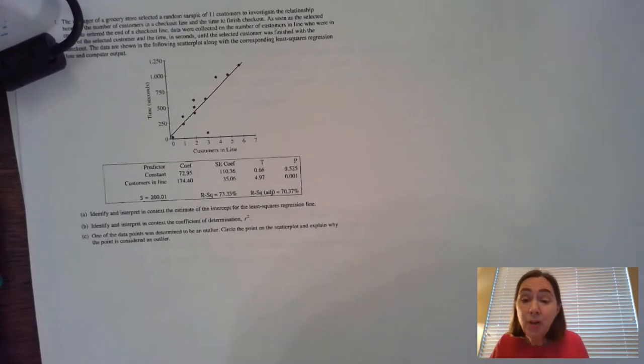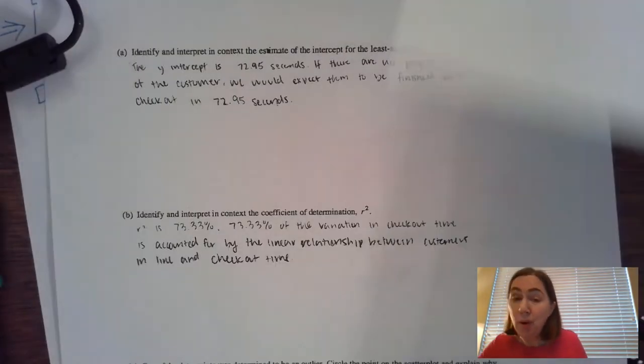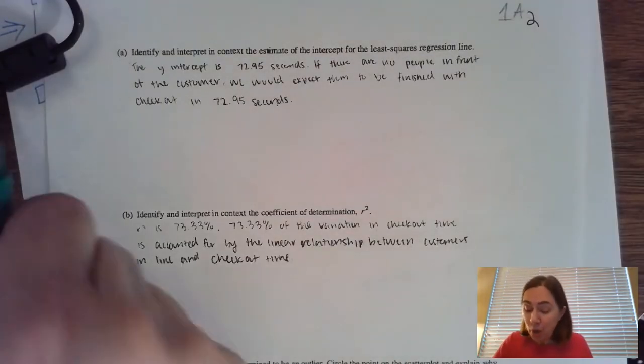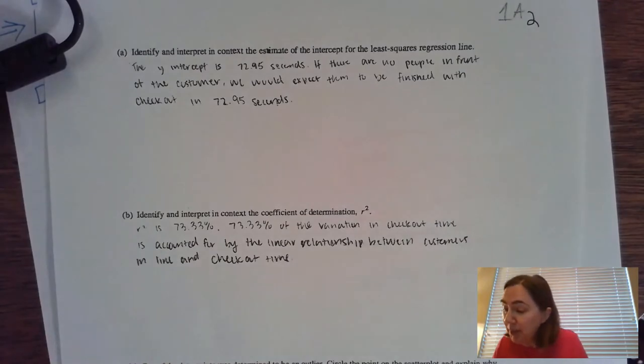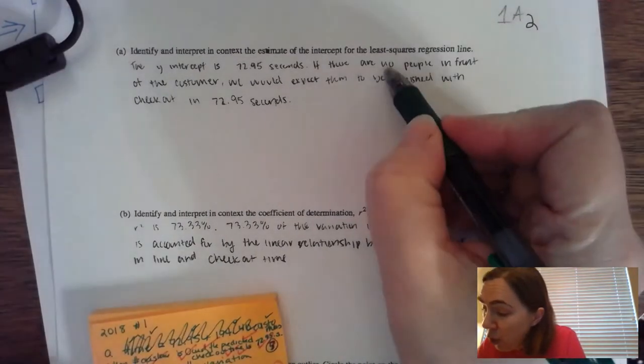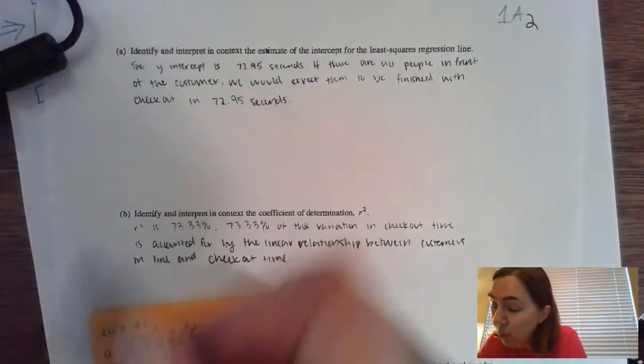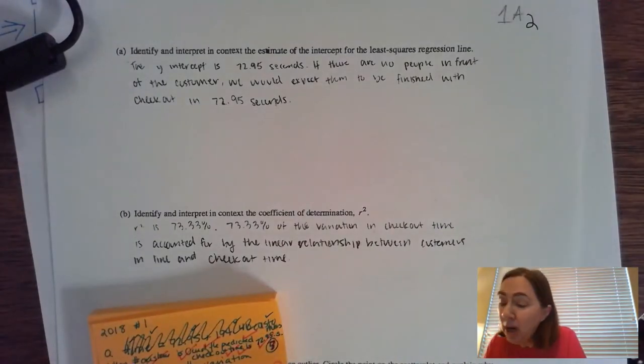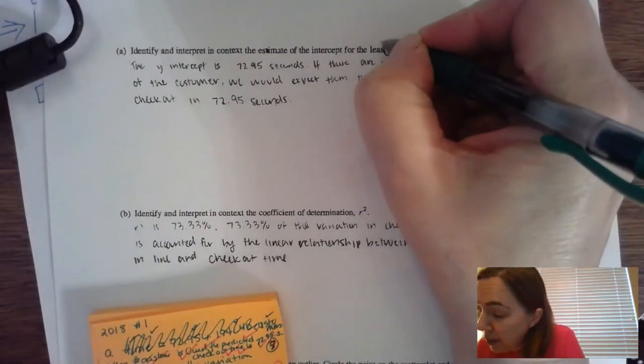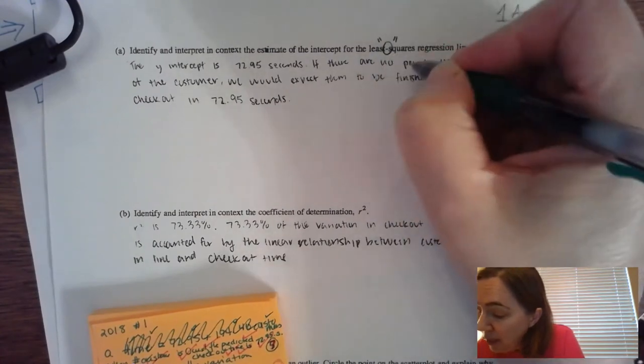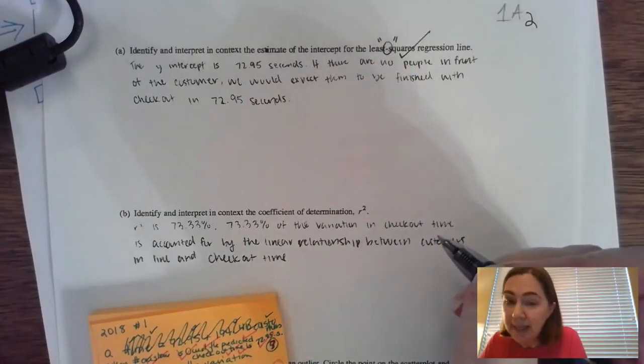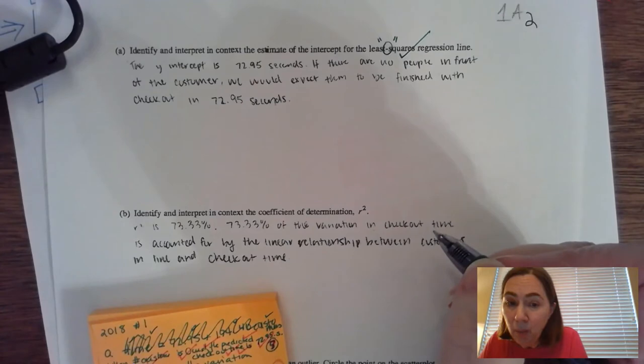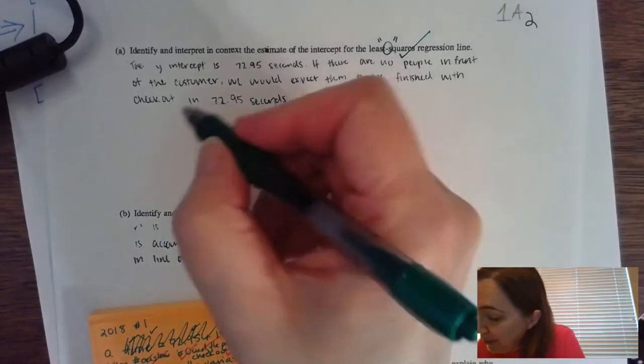Interpreting the y-intercept is the when situation when the x is zero. That means for this particular problem when there are no people in line or when there are zero customers in line. There needs to be the concept of zero. No people is the same thing as zero waiting in line in front of the customers. So there's the x variable.